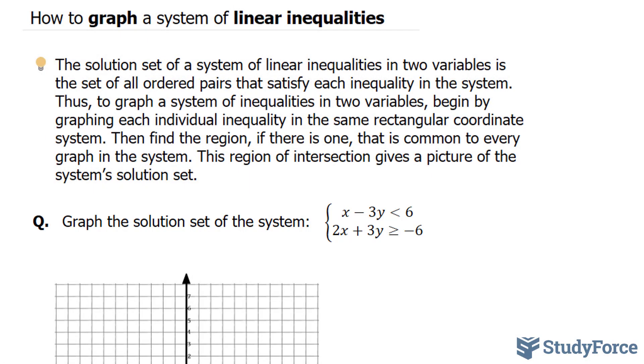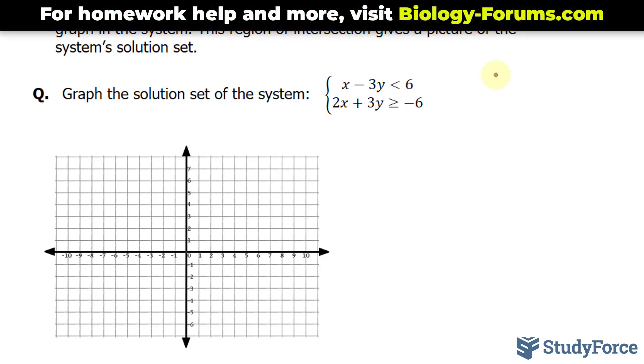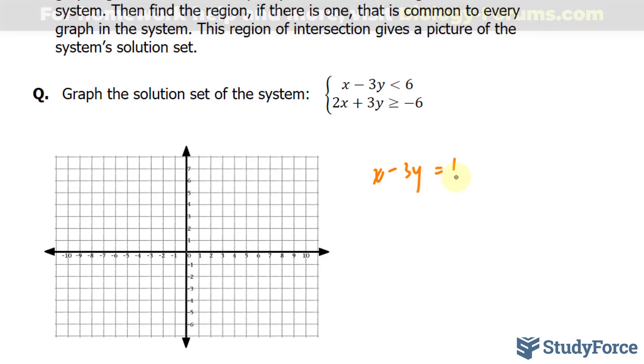My first step is to solve for y in both of these, and I can do that by replacing the inequality symbol with an equal symbol. Starting with the first inequality, we have x minus 3y is less than 6. That will be written as x minus 3y is equal to 6. I'll solve for y, and I can do that by taking this x over. 6 minus x is equal to negative 3y. I divide both sides by negative 3. This gives me y is equal to 6 divided by negative 3 is negative 2 plus 1 over 3x.